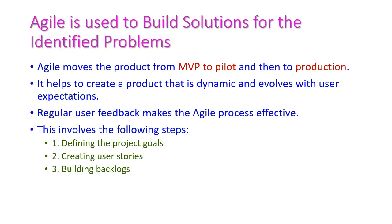Agile is used to build solutions for the identified problems. It moves the product from the minimum viable product (MVP) to pilot and then to production. It helps create a product that is dynamic and evolves with user expectations. Regular user feedback makes the agile process effective. This process involves the following steps: first, defining the project goals; second, creating user stories and building backlogs.